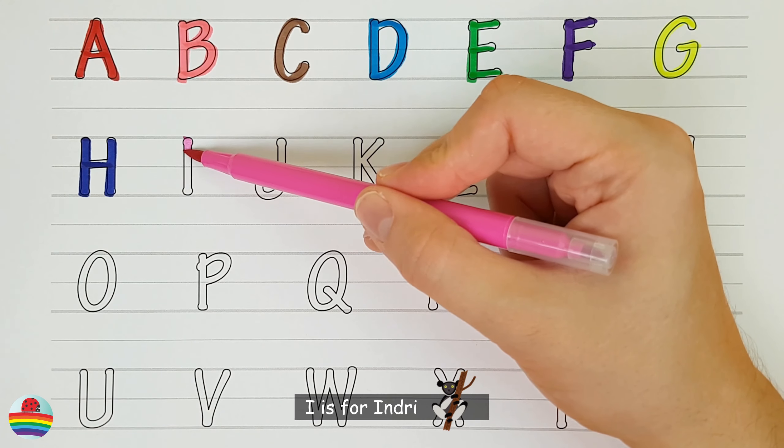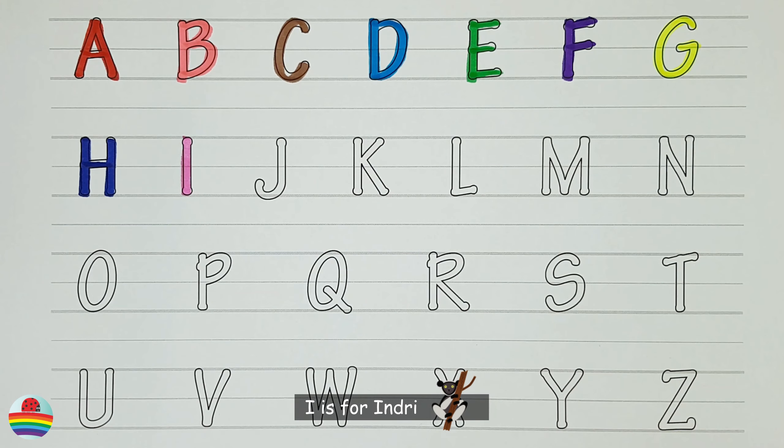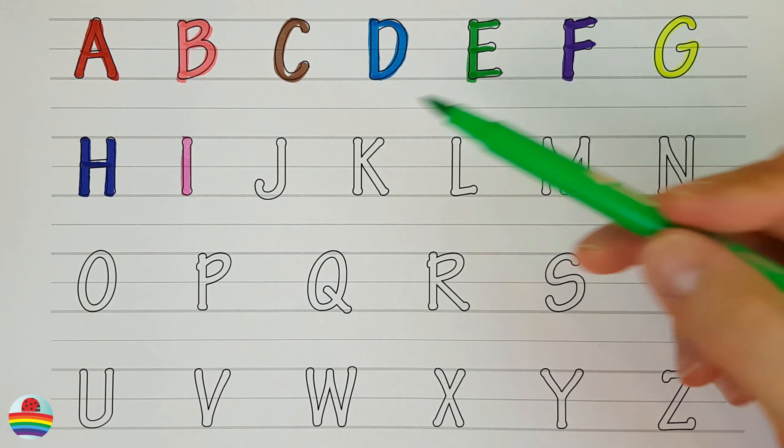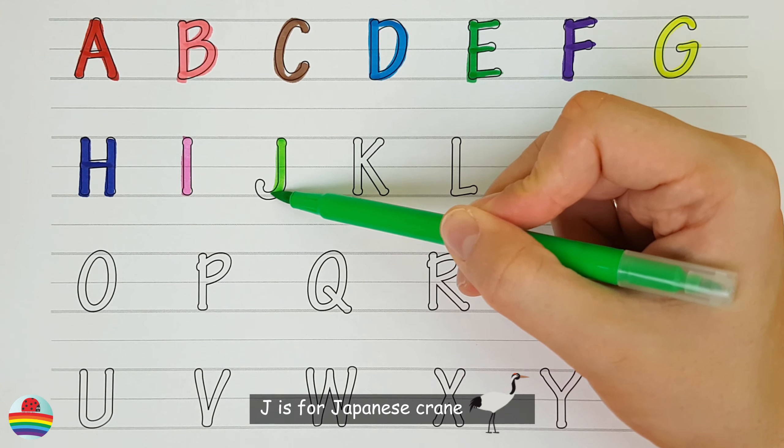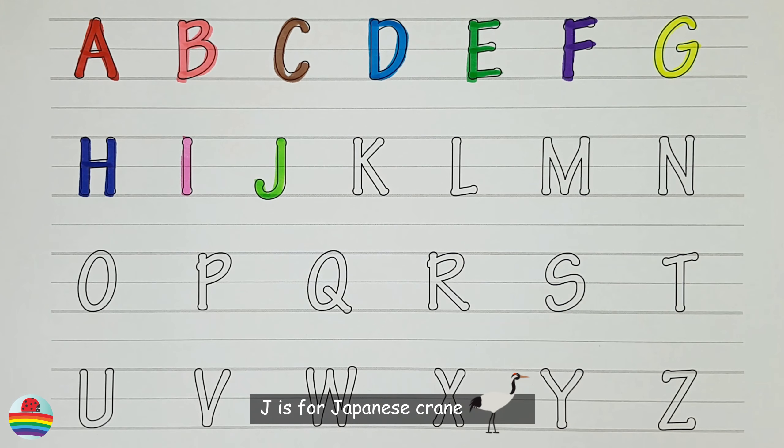I. I is for indri. I. J. J is for Japanese crane. J.